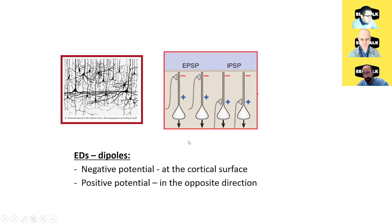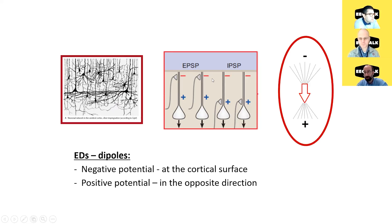Inhibitory synapses can also generate epileptiform discharges, but here the synapses are closer to the cell body. Chloride goes into the cell, so the extracellular space is positive, and because of the return currents you have negativity close to the surface of the cortex. So regardless of whether this is an inhibitory or excitatory synapse, the net effect for interictal epileptiform discharges is the same: negativity towards the surface, positivity towards the white matter.